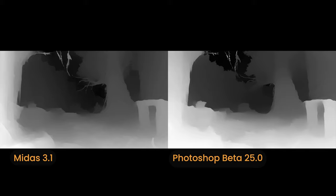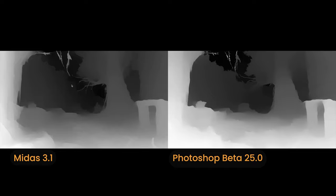Comparing the two outputs with Midas 3.1 on the left and Photoshop beta on the right - there are pluses for both. On the left, we get more clarity over the branch coming out from the tree, whereas Photoshop has very nice crisp definition around the edges of the leaves and more clarity around smaller branches. The gradient smoothing from light through dark gray to black is much smoother on the Midas output compared to Photoshop, which gets a little confused and places some branches at the same depth as the background behind them.